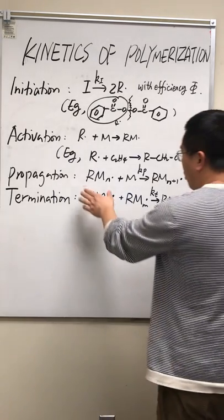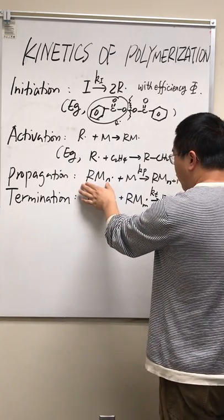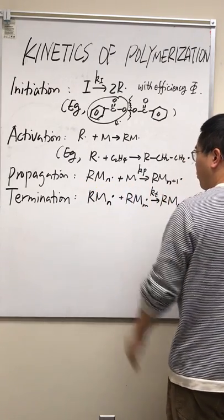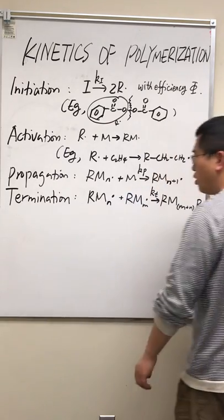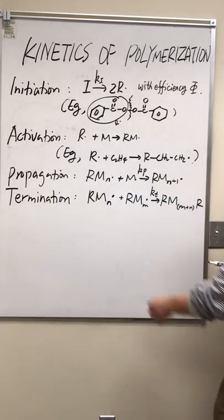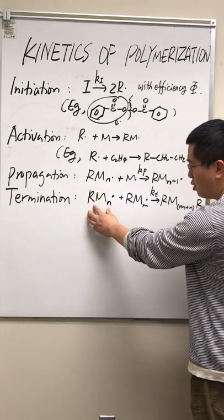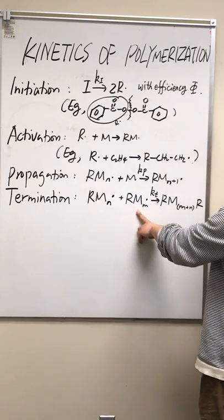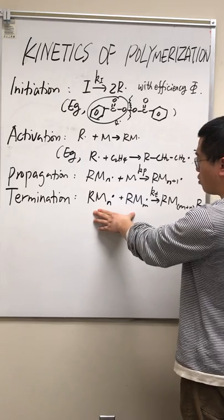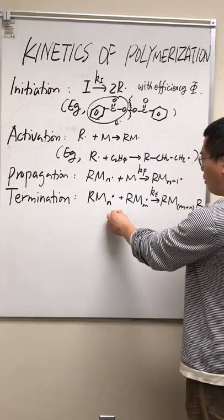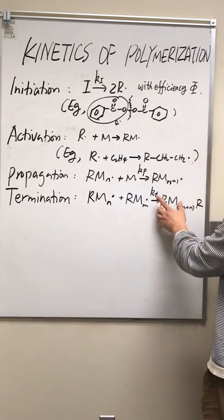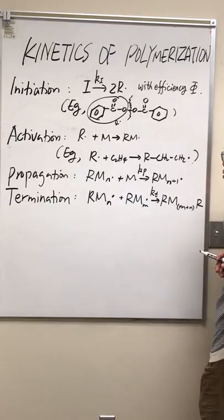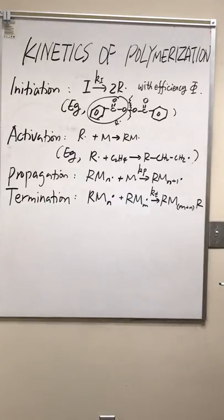After activation, we have propagation, where the polymer chain keeps growing one monomer at a time until termination. It's possible to have two radical chains — one with a length of N monomers and one with a length of M monomers. Those two radicals may react with each other and form a bond, and this termination reaction removes two radicals from the reaction system.